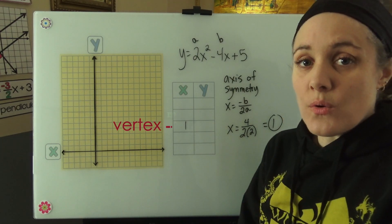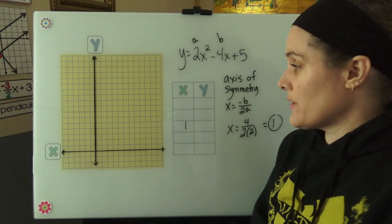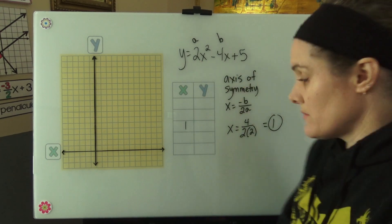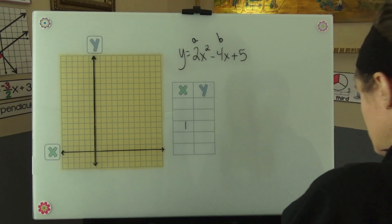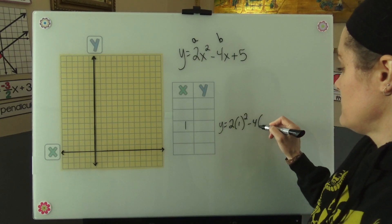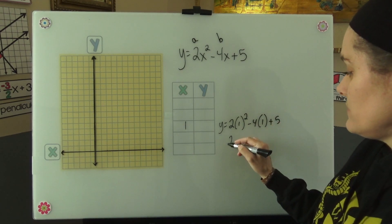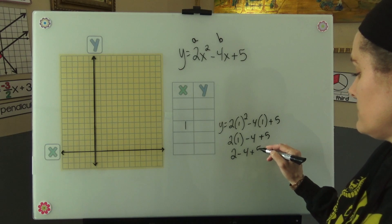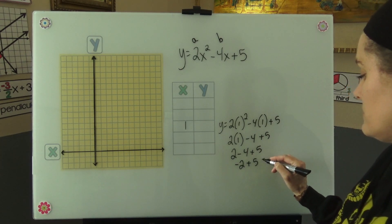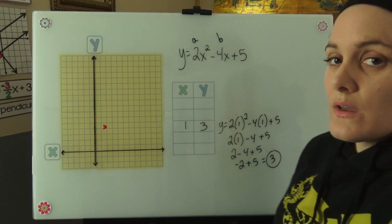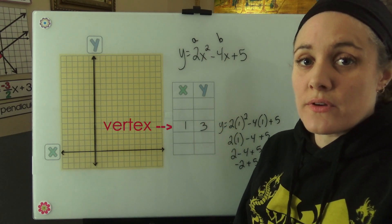Now I need to find the y coordinate at my vertex. To do that, I'm going to plug in 1 to my quadratic. First let me erase all this. Now I know that my vertex is 1, 3, so I'll plot that.